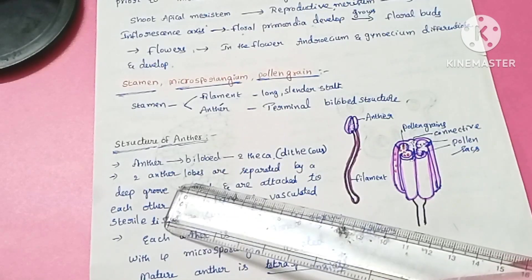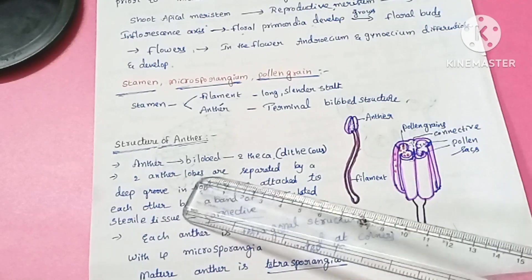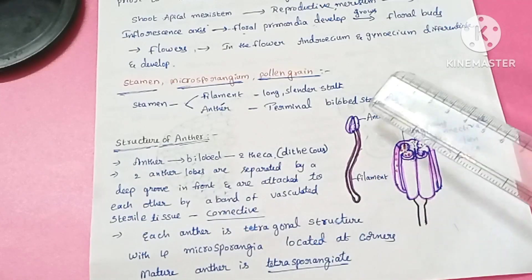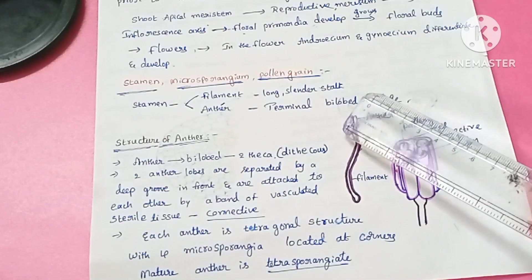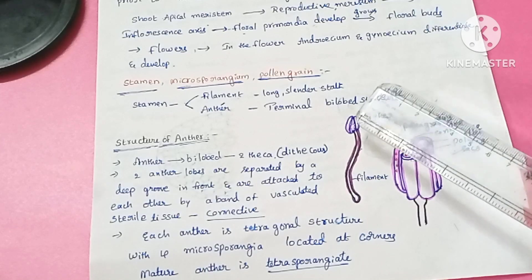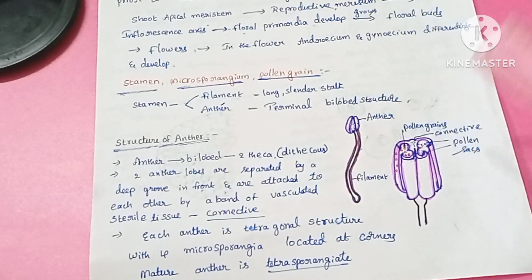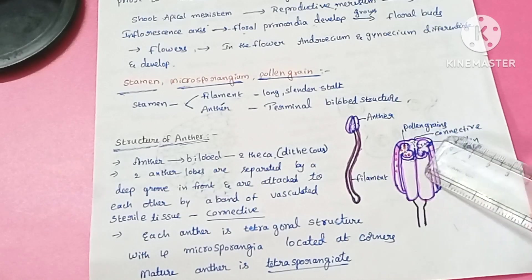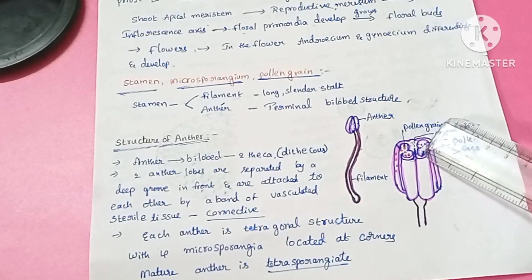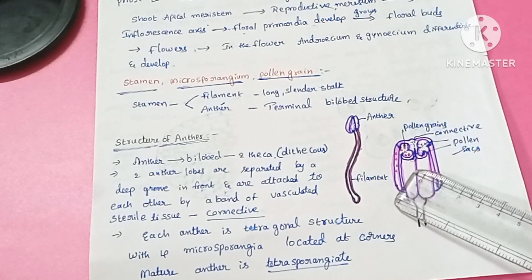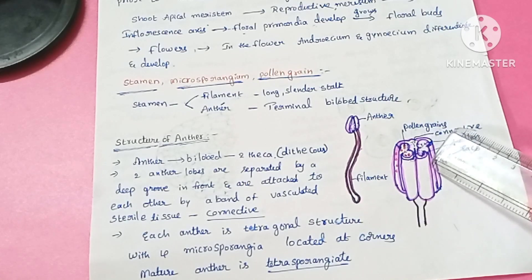The anther is a terminal bilobed structure — there are two lobes. In transverse section, each lobe consists of two thecae, so there are four thecae in total. This is the dithecous condition. The anther thus consists of two lobes, hence it is called a bilobed condition.